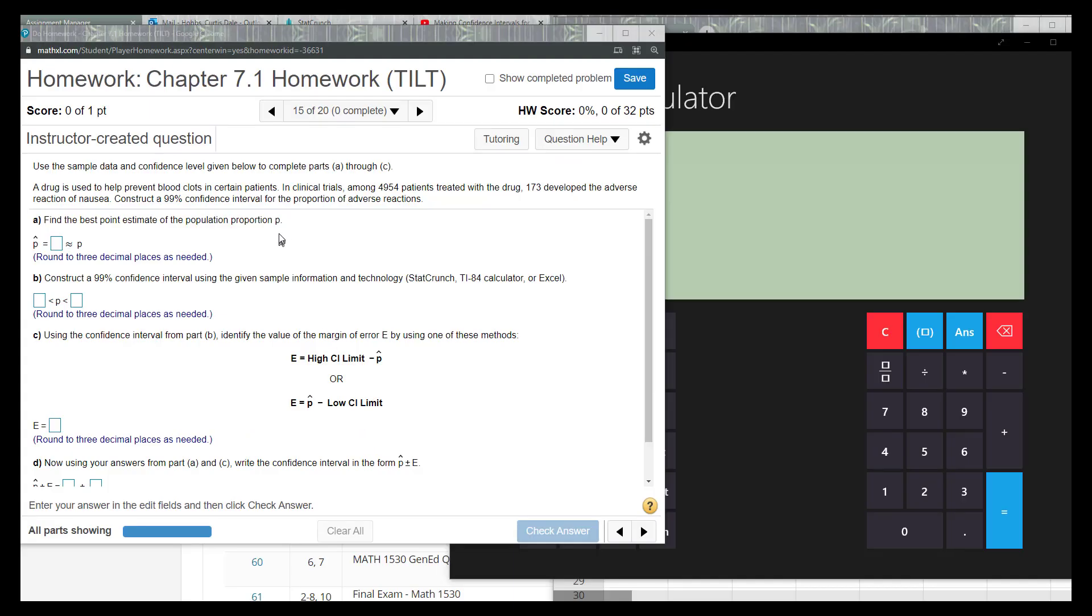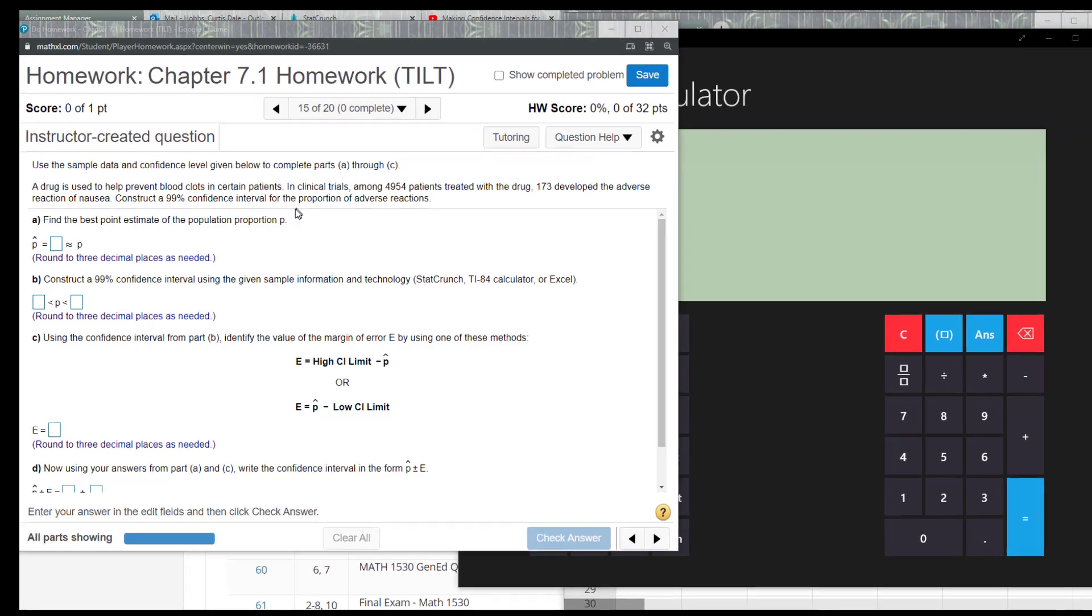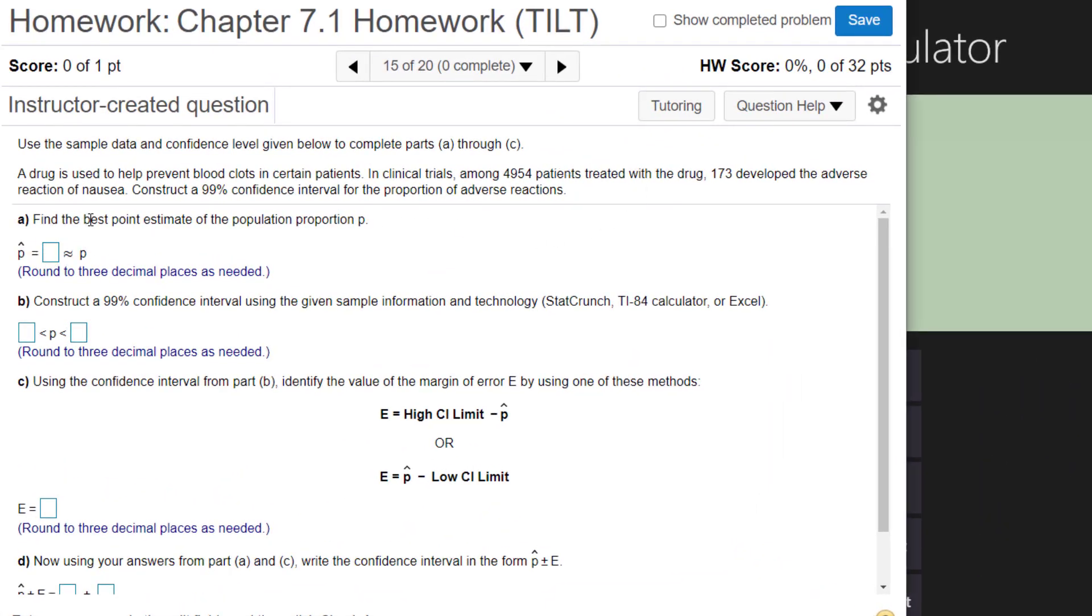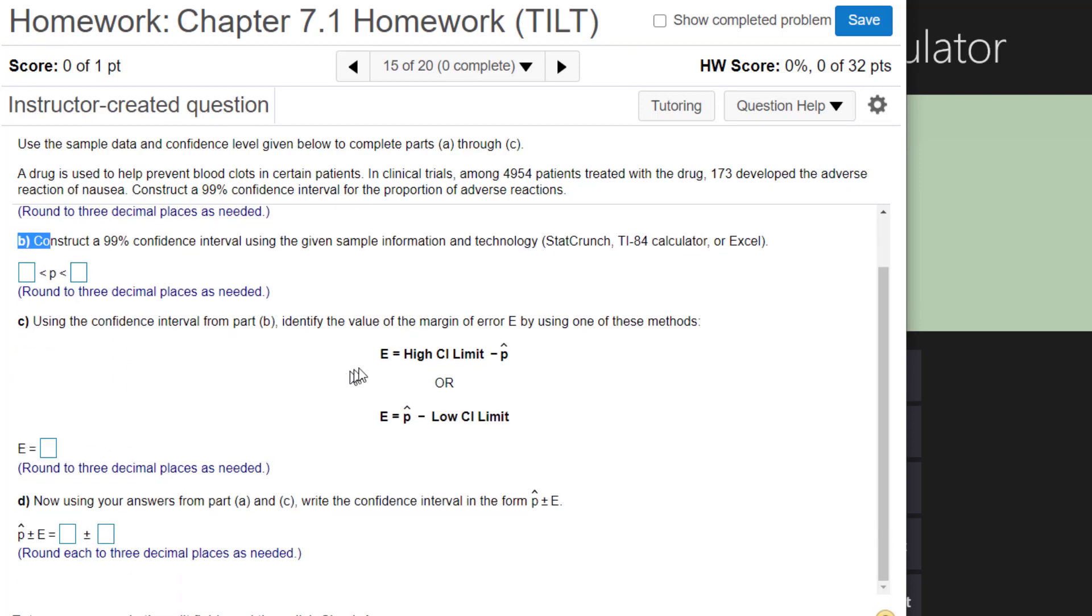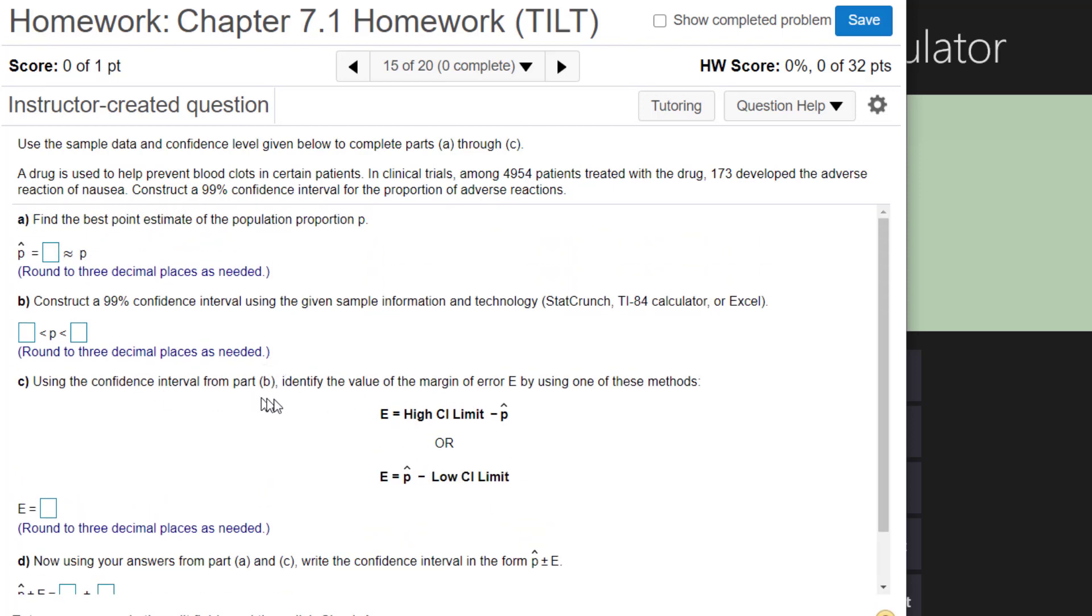So let's look at a problem where you have to go through the parts finding the best point estimate, which we've already done in several problems previously to this. But we also have to construct a confidence interval as well as find the margin of error E. And there are a couple different ways you can actually find margin of error E. These are two of the ways listed in this problem but of course there are more. So first off we do need the middle of our confidence interval, our point estimate right here. And of course this is where you take your number of successes.